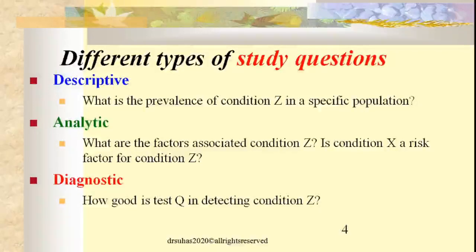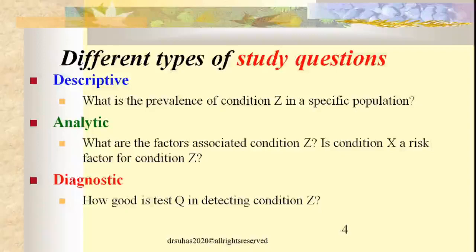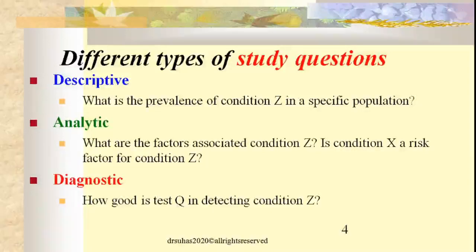Descriptive study designs help understand what is the prevalence of a particular condition in a particular area, community, or population. Analytical studies can identify various risk factors associated with conditions — for example, risk factors for hypertension, diabetes, and obesity as listed in textbooks are found through study designs using case control studies or cohort studies.